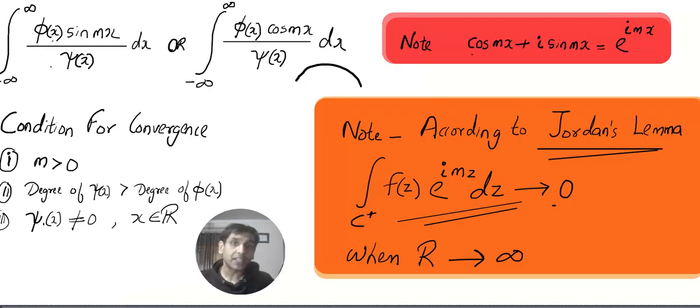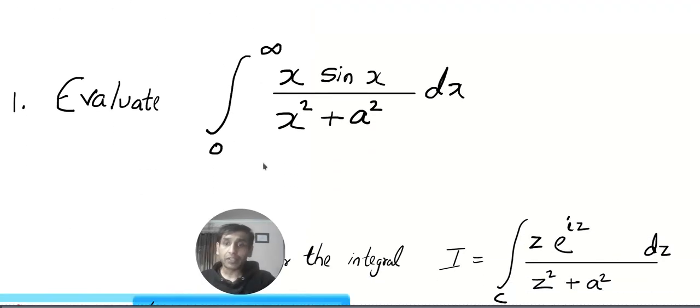But before we start, make sure you understand this part: what is e^(iθ) equals cos θ plus i sin θ, and because of that e^(imx) will be cos mx plus i sin mx. And once more I can give you one guarantee: the students who worked on Type 1, all four problems, will enjoy this type.